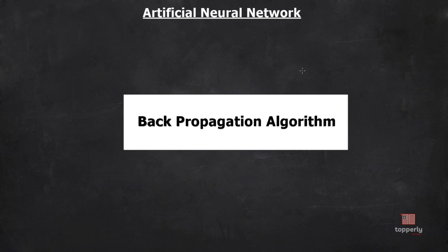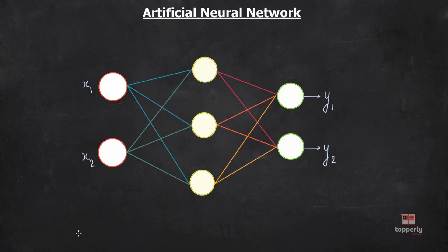Welcome back to neural network lectures. In this lecture we are going to discuss the backpropagation algorithm. Backpropagation is used to learn the weights of a multi-layer neural network with fixed architecture. It performs gradient descent to minimize the sum squared error between the network's output values and the given target values. Loosely speaking, backpropagation helps us calculate the gradient of the cost function.